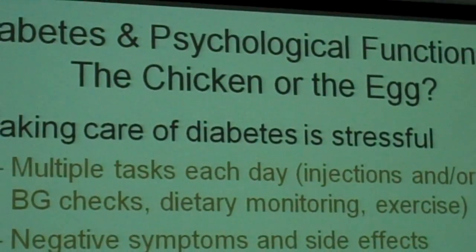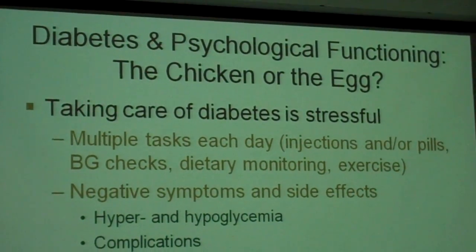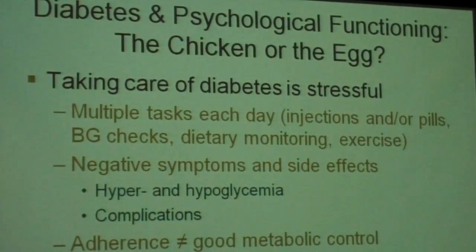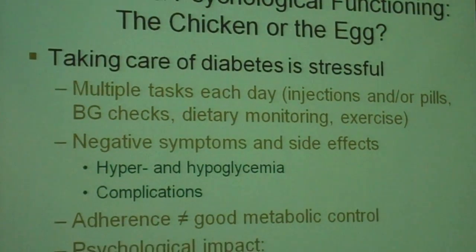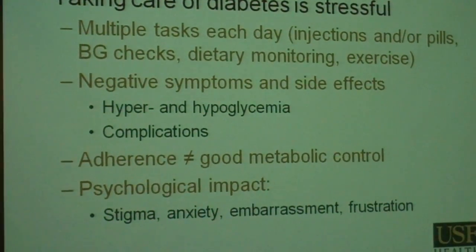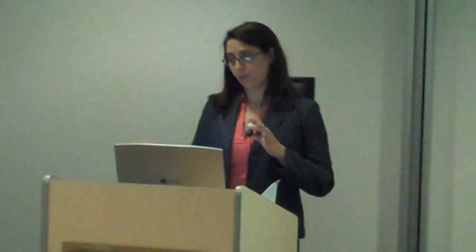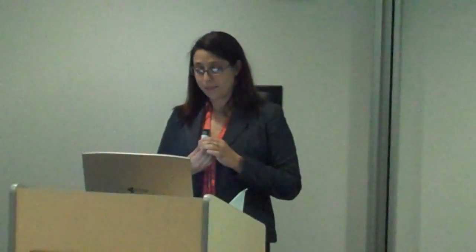One key debate among researchers is: which comes first? Is it the diabetes that causes psychological disorder or distress, or were those issues pre-morbid to the diabetes and simply become more complicated once the person is diagnosed? The answer is basically both. Both of those things happen, and we don't yet have a good handle on whether one is more likely to cause the other. Depending on the person, both factors can be influential.